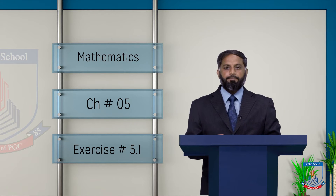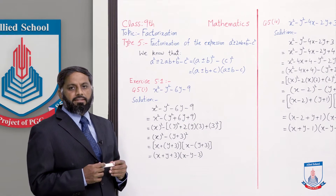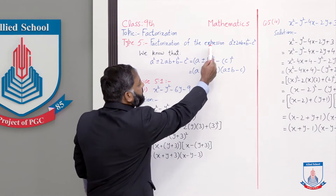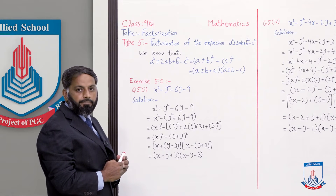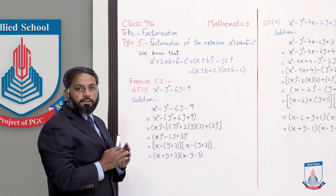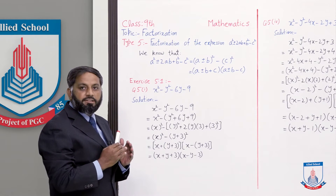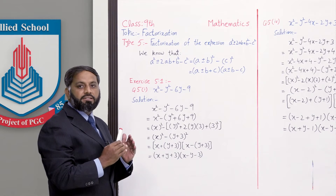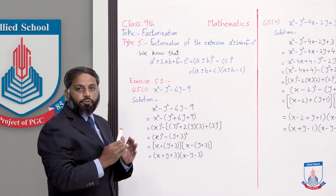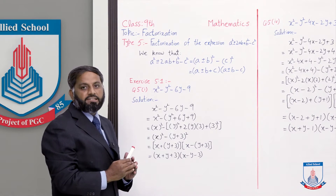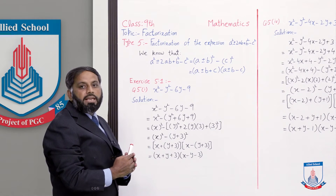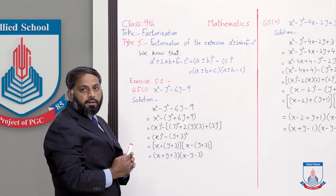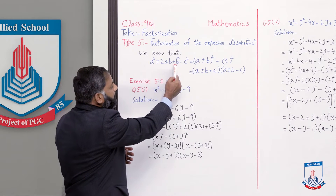Board ki taraf chalte hain. Type 5 factorization ki hai: factorization of the expression a² ± 2ab + b² - c². Ab is expression pe gaur karen to plus minus two sign isliye lagaya gaya hai kyunke jo first three terms hain woh a+b ka perfect square bhi ho sakta hai, a-b ka perfect square bhi ho sakta hai. Dono forms mein first three terms a+b ya a-b whole square banengi, aur minus c² jo hai last term woh bhi ek perfect square hogi.